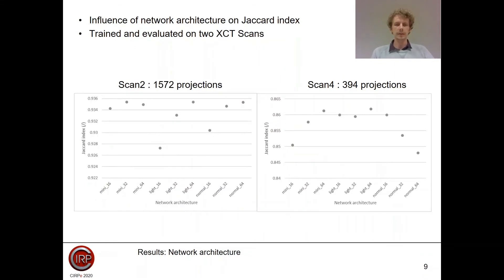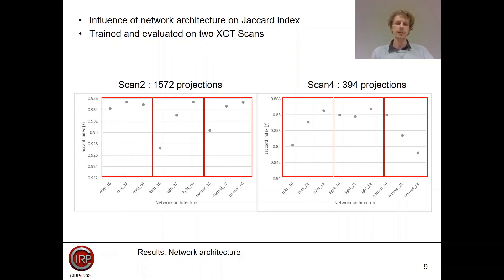So back to the nine different configurations that we trained on two different scans, one with 1,500 projections and one with 400 projections. What we observe is if we increase the number of filters, we see that the quality of the segmentation remains constant or increases, except for the normal architecture trained on scan 4. If we increase the number of filters, you see that the quality of the segmentation decreases, and this is probably caused by the increase in number of trainable parameters and the increase of noise inside the training data.